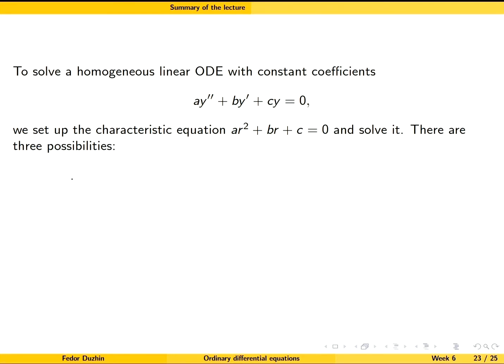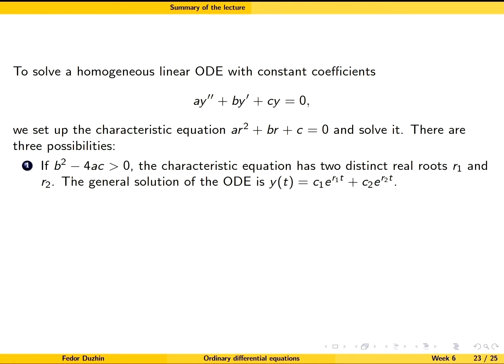To do all the cases, we set up the characteristic equation, which is just a quadratic equation, then we solve it. If the discriminant is positive, there are two distinct real roots and then both of them appear as exponents in the solution.